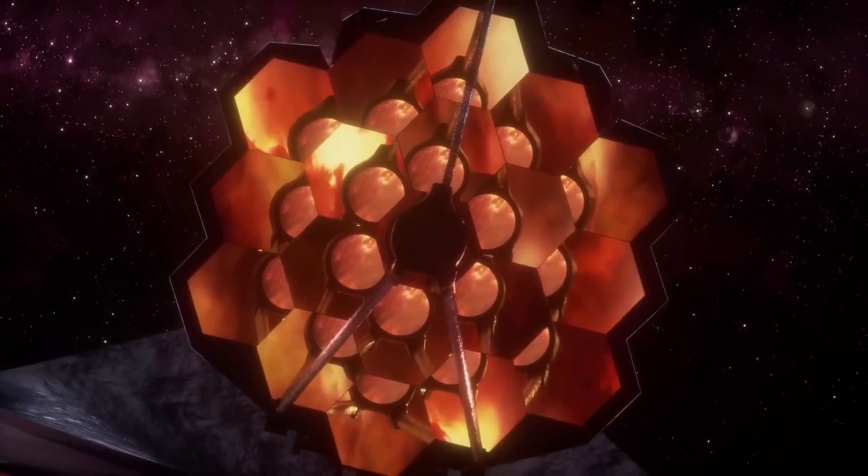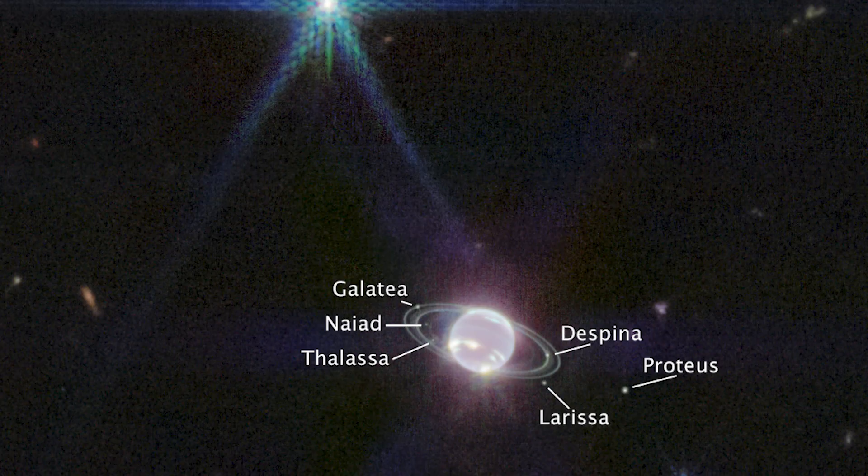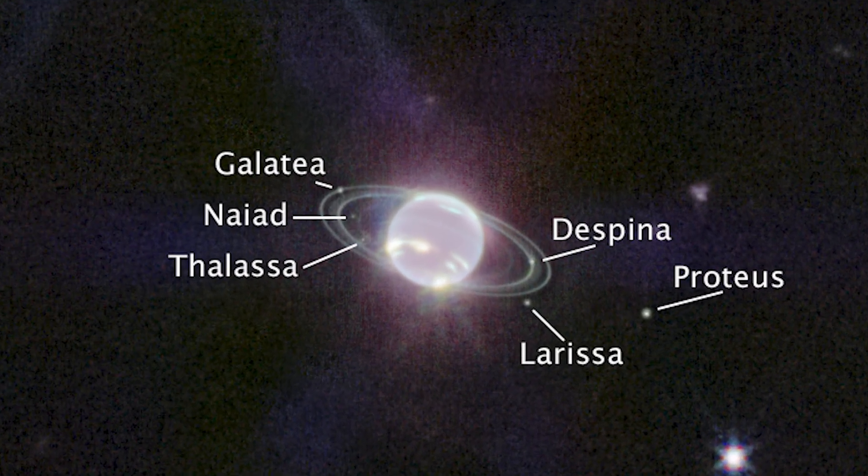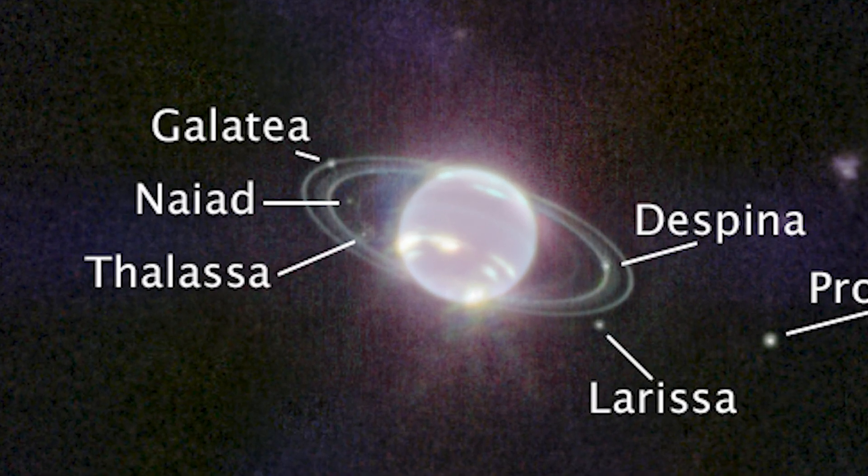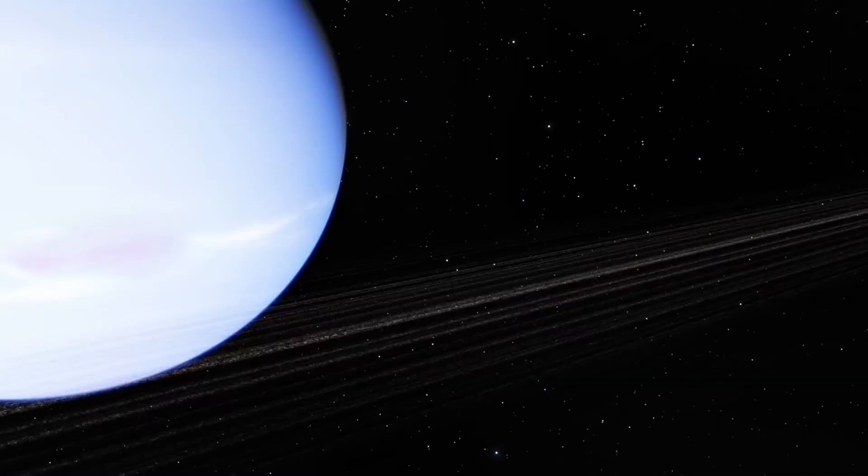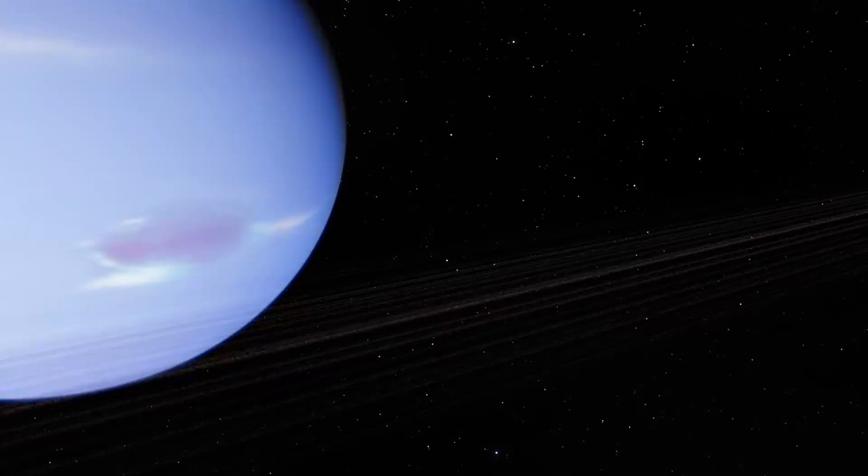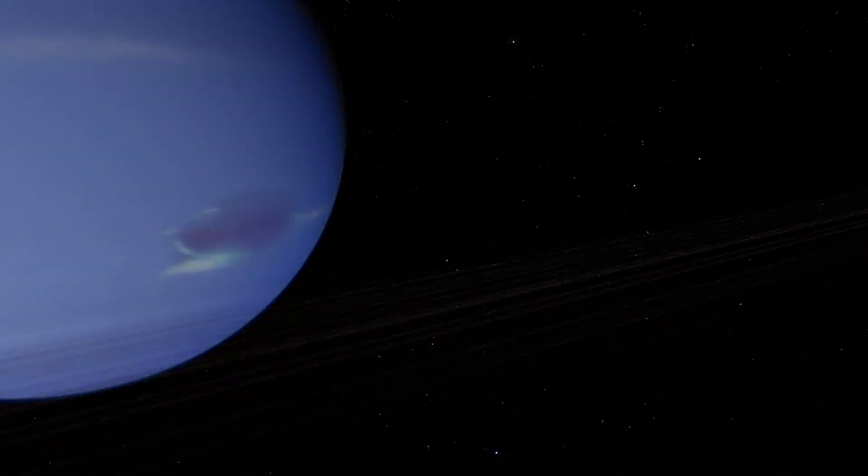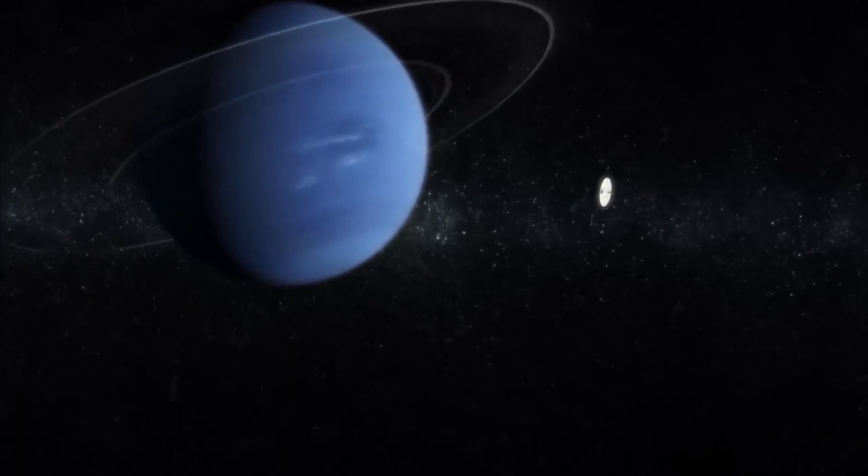In another image, the JWST captured a view of the planet Neptune that has never been seen before. The image shows Neptune's rings and faint dust bands in amazing detail, something planetary scientists have not seen in three decades since Voyager 2 flew by the planet in 1989.